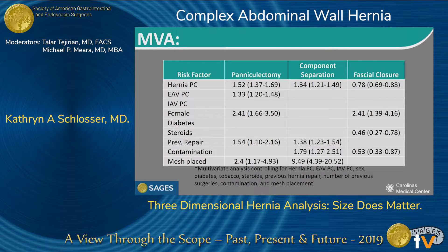Hernia PC, composed primarily of hernia dimensions and ratio of intra-abdominal to hernia volume, was associated with performance of a paniculectomy, component separation, and fascial closure. Extra-abdominal volume PC was associated with paniculectomy but not the other factors. Female sex was also associated with paniculectomy and achievement of fascial closure, and a history of previous repair was associated with paniculectomy and component separation.